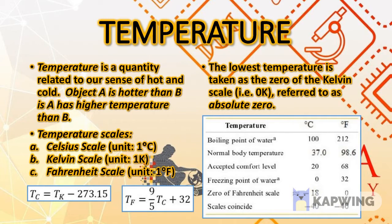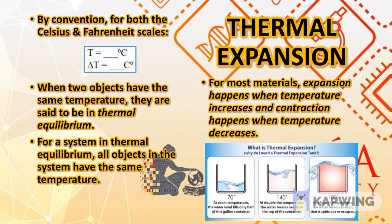The lowest temperature is taken to be zero Kelvin, referred to as absolute zero. Here are some sample temperature values to remember: the boiling point of water is 100°C, normal body temperature is 37°C, room temperature (the accepted comfort level) is 20°C, and the freezing point of water is 0°C. It is recommended that you memorize these values.